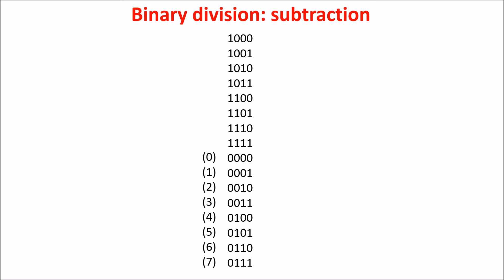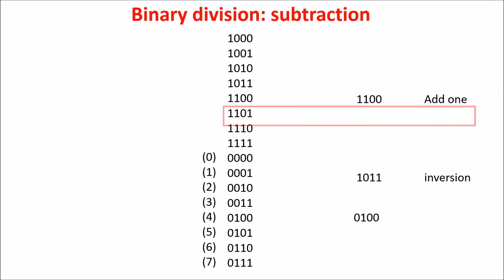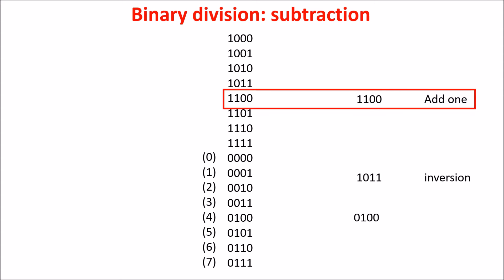Let's see an example. Our positive numbers start with 0 and go up to 7. Let's calculate, for example, minus 4. We start from 4: first we invert it, and second we add 1, and then we find our minus 4. This is the way we represent negative numbers in binary. In this way, we can handle negative numbers easily and execute a subtraction using an adder.